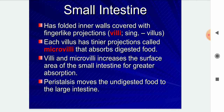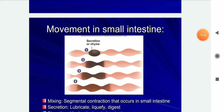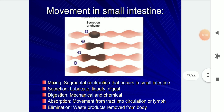Villi and microvilli increase the surface area of the small intestine for greater absorption. The movements in the small intestine include mixing, secretion, digestion, absorption, and elimination. Segmental contractions occur in the small intestine; secretion lubricates digestion both mechanically and chemically.